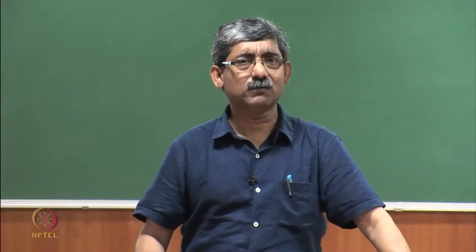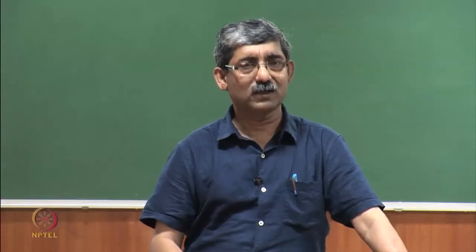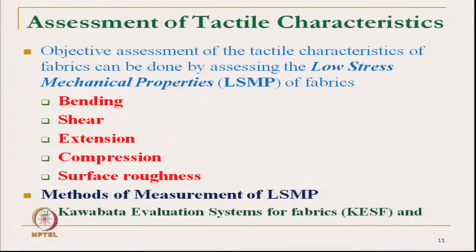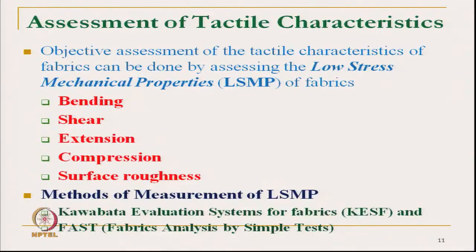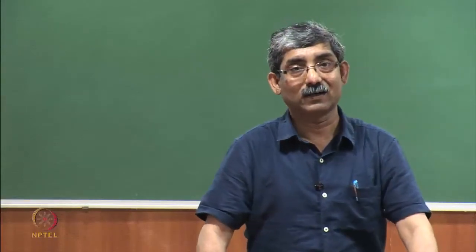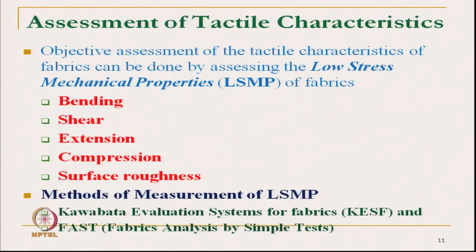There are various methods available, but 2 successful commercial instruments are available. One is the Kawabata Evaluation System for Fabric — the KESF system — and another is the Fabric Analysis by Simple Test — FAST. Although FAST is not actually developed for measuring tactile characteristics, we can indirectly get the tactile characteristics from it. We will discuss each measurement method in detail.